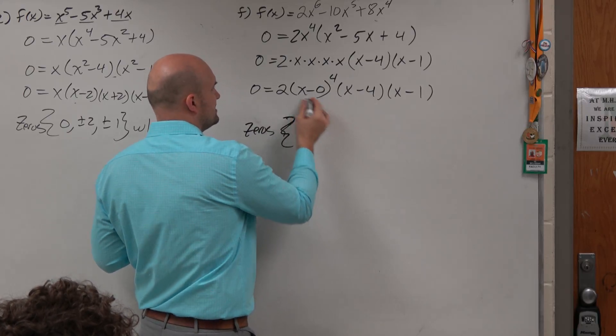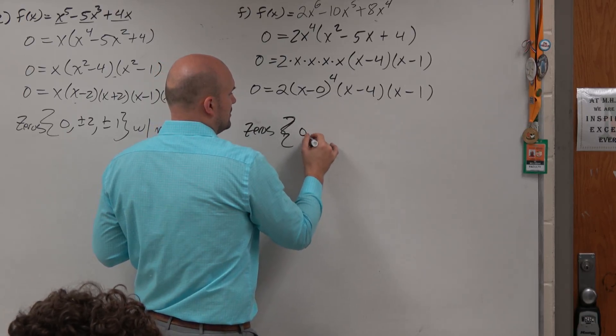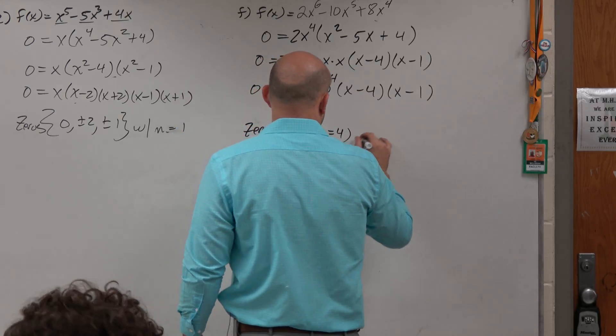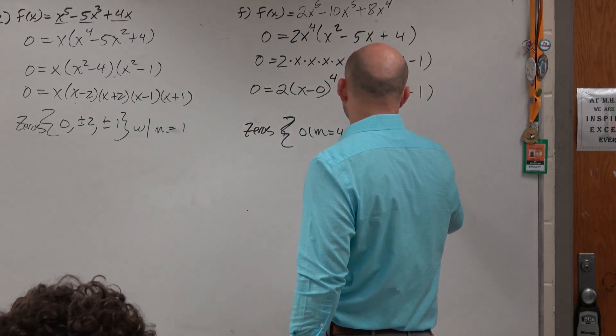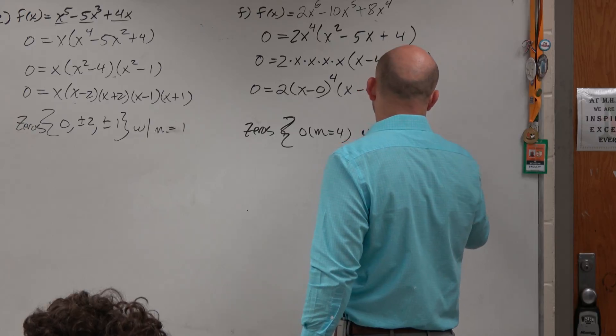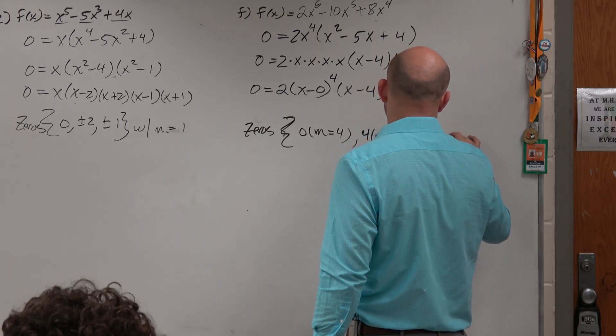I'm going to have 0 at 0 with a multiplicity equal to 4. And then I have positive 4 with a multiplicity equal to 1. And I have 1 with a multiplicity equal to 1.